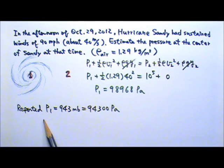The pressure data reported by weather centers was 943 millibars, which is 94,300 pascals. This is lower than our Bernoulli's equation estimate.